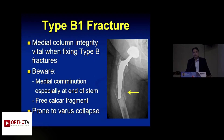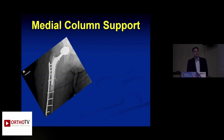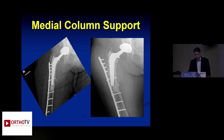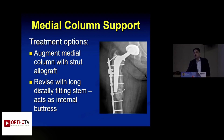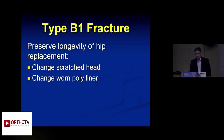An important determinant of outcome in B1 fractures is the integrity of the medial cortex. If there is medial comminution at the tip of the stem, even with good reduction and adequate fixation, these will fail in varus. In such cases, augment fixation with a medial strut allograft, or alternatively revise using a long stem so the stem itself acts as an internal buttress. When retaining a prosthesis, also take the opportunity to increase longevity — change any scratched head and change the bearing liner.